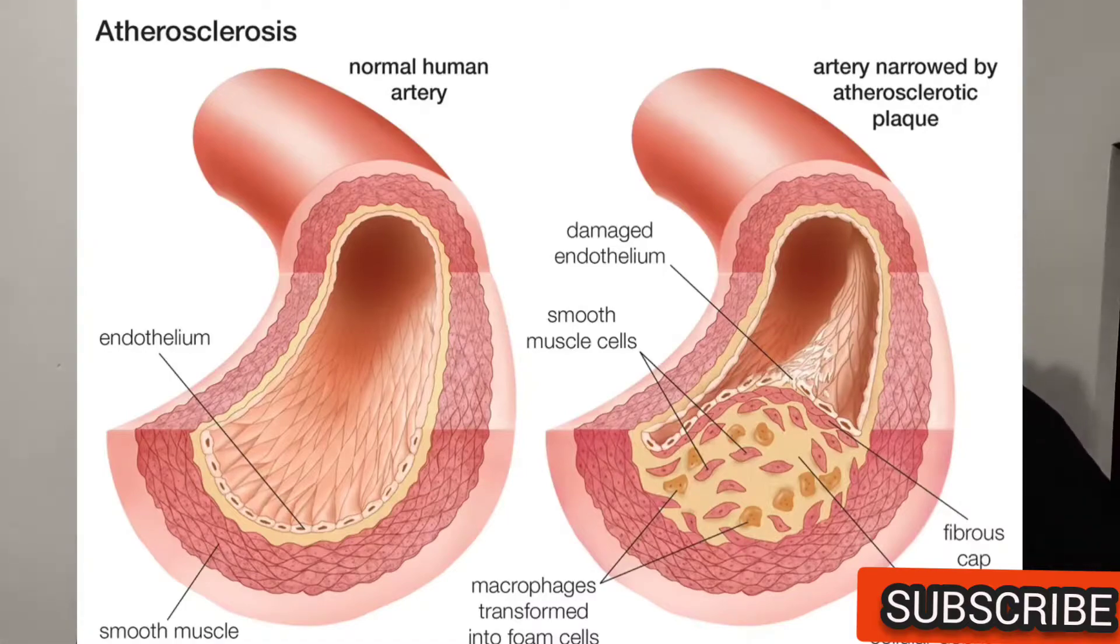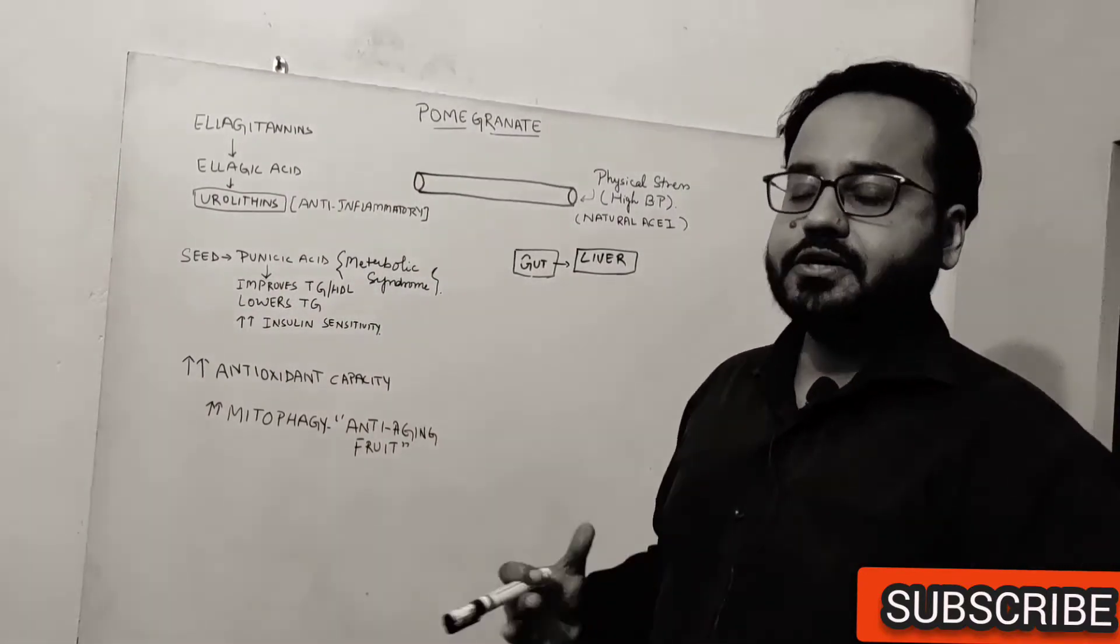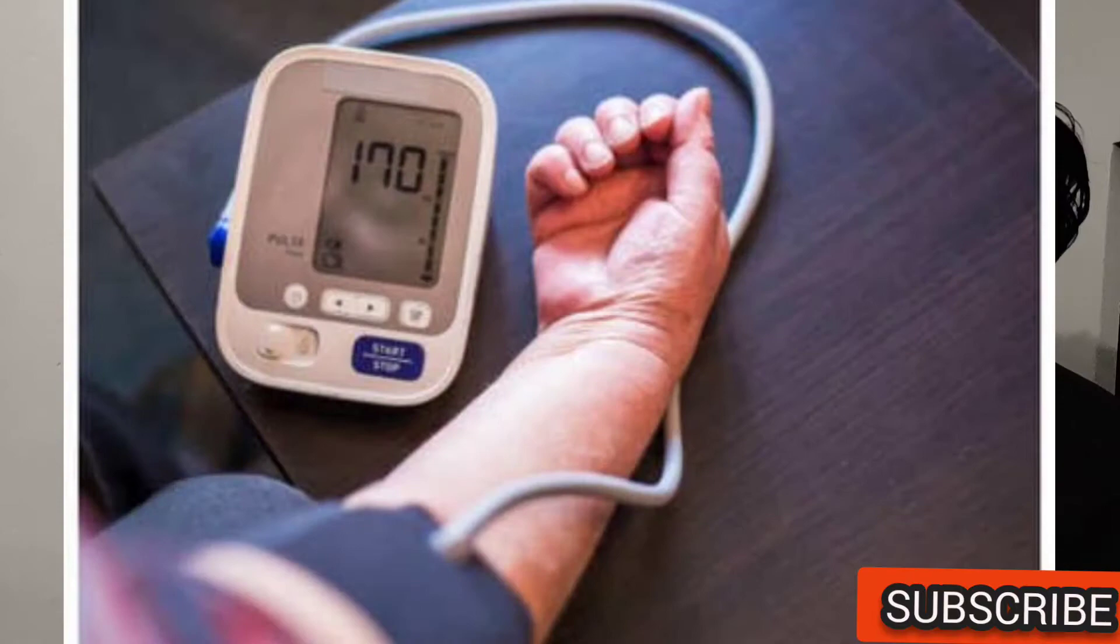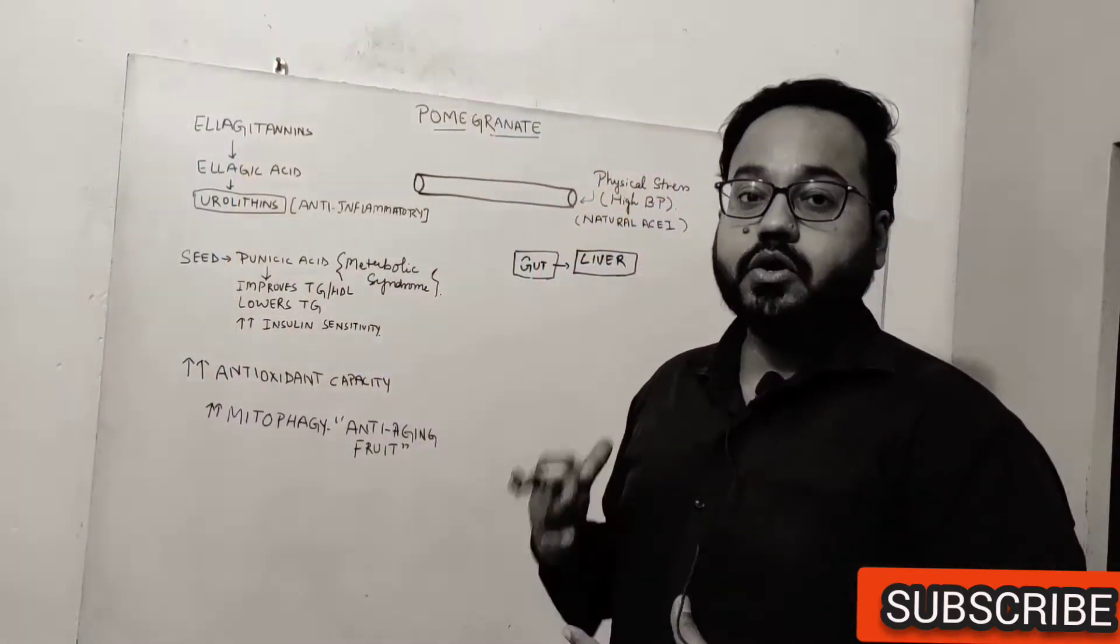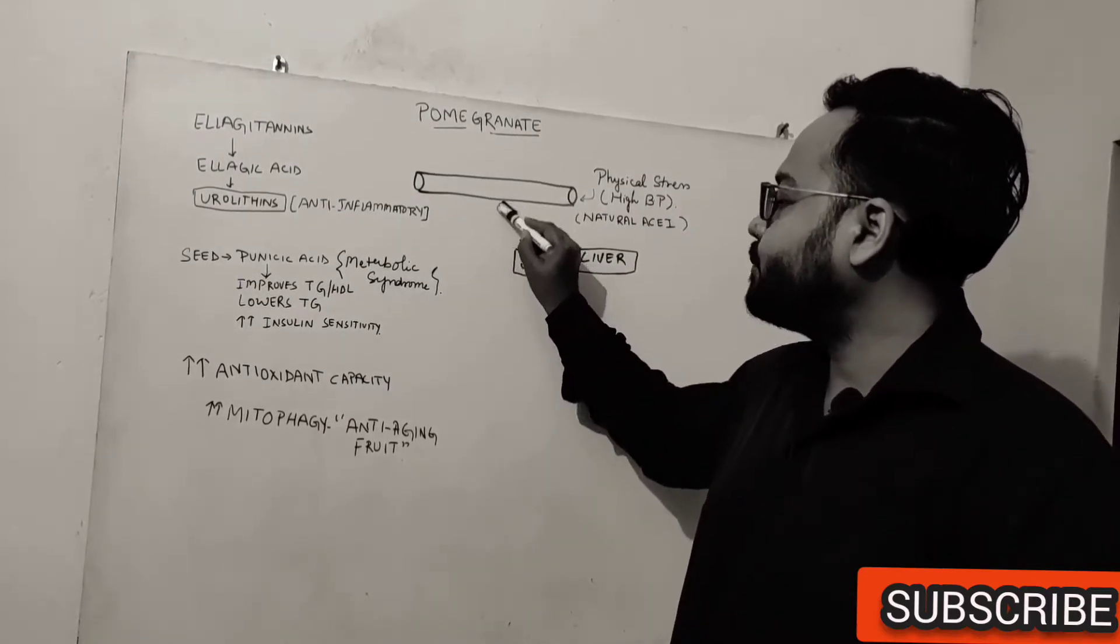Now how does the inner lining of your arteries become damaged? It can be due to a lot of conditions. One of the major contributing factors is chronic high blood pressure. What happens is when your arteries are subjected to physical stress like chronic high blood pressure, it can cause wear and tear of the lining of your arteries and this becomes exposed.